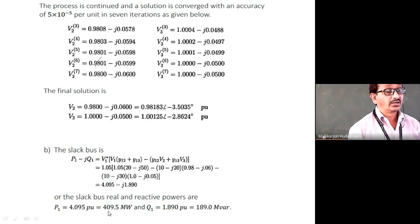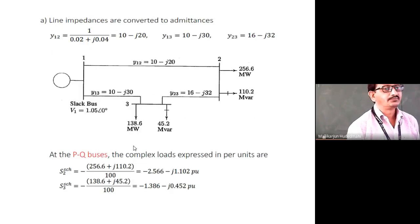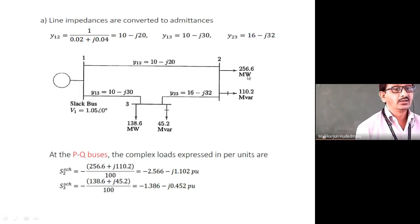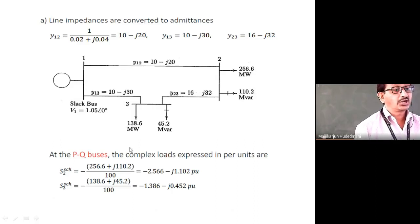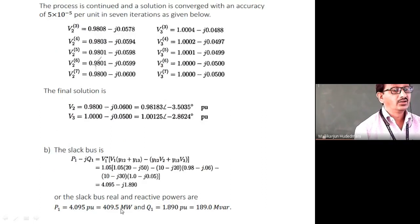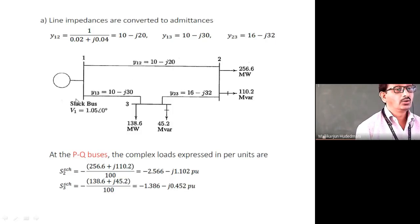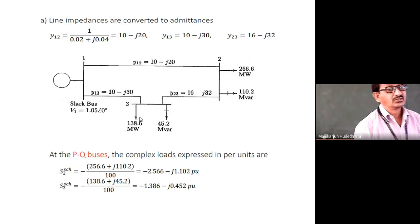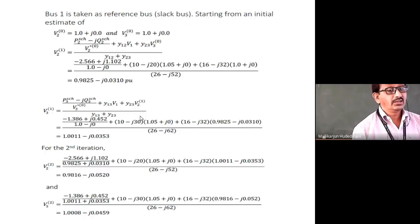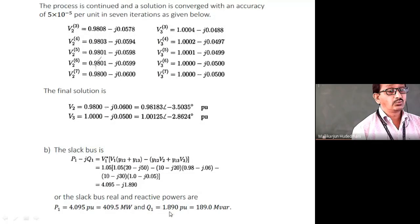Checking the power balance: load demands are 138 MW at bus 3 and 256 MW at bus 2, summing to 394 MW. The difference between 409.5 MW injected and 394 MW demanded equals the transmission line losses. Reactive power injected is 1.89 pu or 189 MVAR. Adding reactive power demanded at buses 2 and 3 gives total reactive power, with the difference being reactive losses in the system.